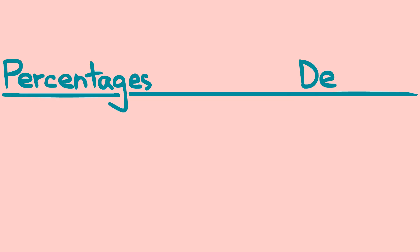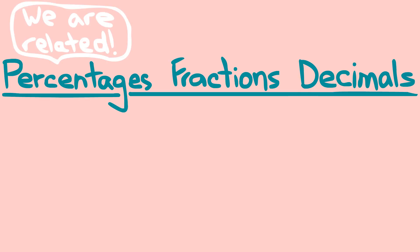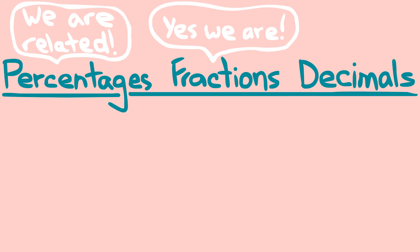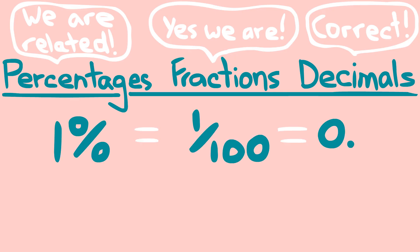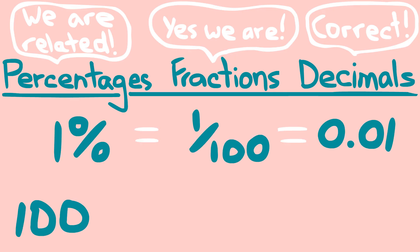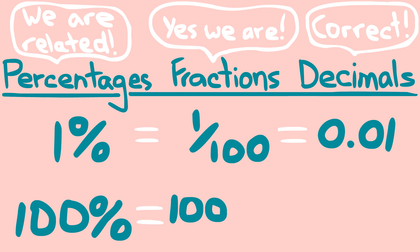Percentages are related to decimals and fractions, and it's easy to quickly convert your numbers into them. 1% is the same as 1 over 100, or 0.01. 100% is the same as 100 over 100, or 1.